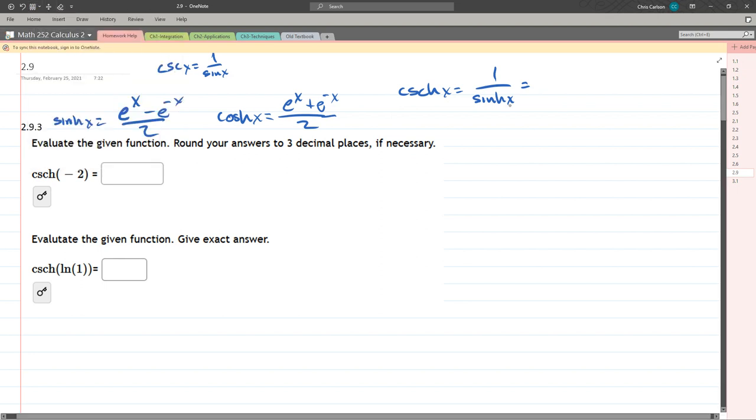So we got 1 over sinh. It's the reciprocal of this exponential here on the left. So it's 2 divided by e^x minus e^(-x). Okay, so that's cosecant hyperbolic. So now we're ready to start on this problem. Cosecant hyperbolic of -2.